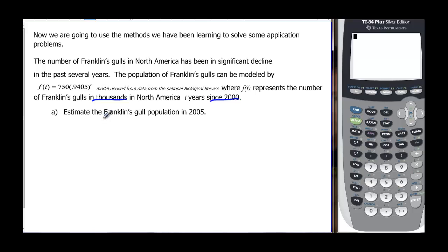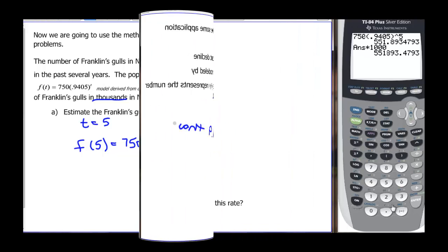When we want to estimate the gull population in 2005, we know that t equals 5, 5 years after 2000. We have the function, we're really doing f(5) and that's equal to 750 times 0.9405 raised to the fifth. So go to our calculator, 750 parentheses 0.9405, close that parentheses, caret 5. We find out that there are approximately 551.9 and this is in thousands.